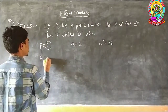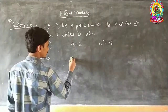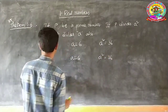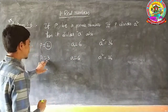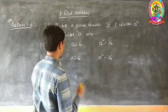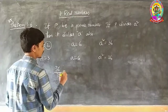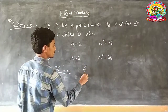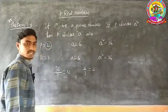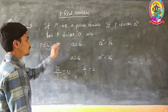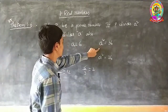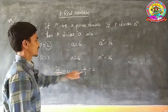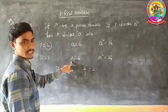Another example: if P equals 3 and A equals 6, then A squared equals 36. Observe: 3 divides 36 — 12 times. It also divides 6, since 6 divided by 3 equals 2. This confirms: if P divides A squared, then it divides A also.